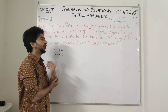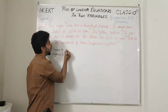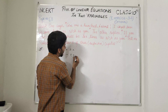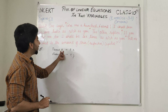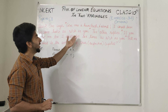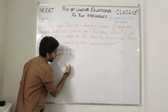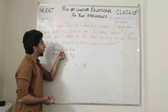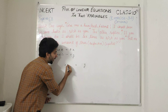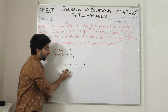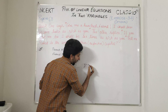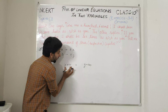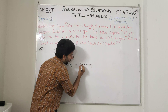Friend A के पास amount होगी rupees X और B के पास होगी rupees Y. अब one says: give me a hundred, friend, I shall become twice as rich as you. इस type के questions में X इधर लिखना है equal to Y इधर. तो A को Y देगा rupees 100, तो इसके पास हो जाएगा X plus 100 और Y के पास हो जाएगा Y minus 100. I shall then become twice as rich as you, so friend A, friend B का twice हो जाएगा.